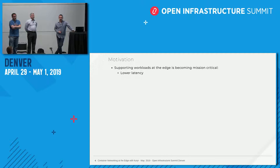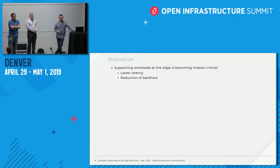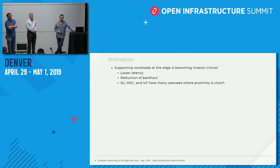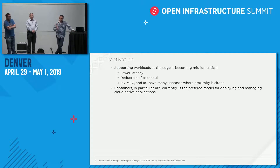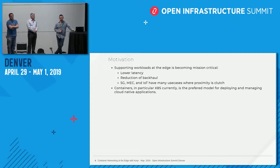Supporting workloads at the edge is becoming critical. Things like lower latency, reduction of backhaul, 5G, IoT, and a thousand other use cases where proximity and latency are important. Containers — particularly Kubernetes right now — is the preferred model for deploying containers. What we're trying to do is get containers going on the edge using the existing tooling that OpenStack has.